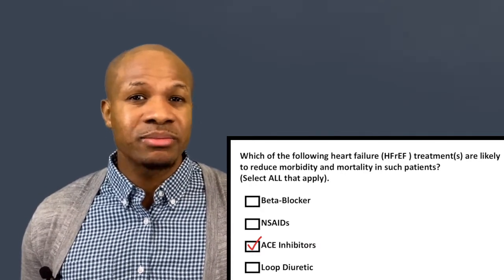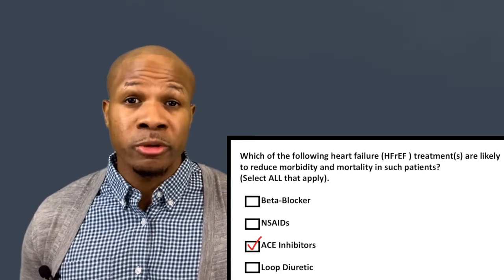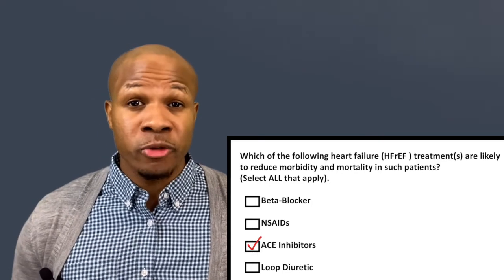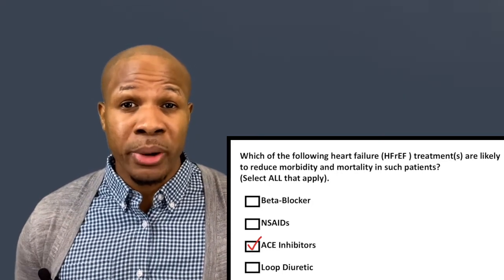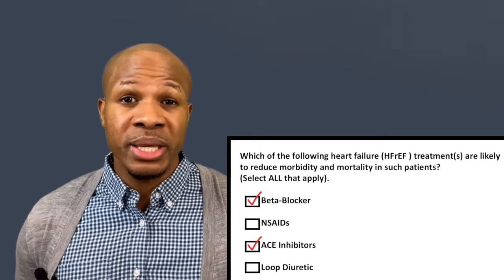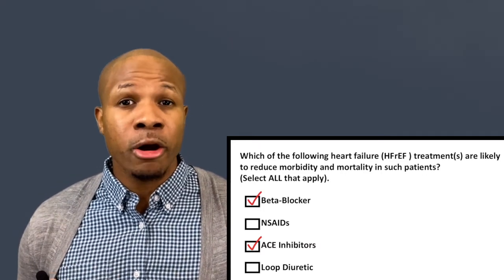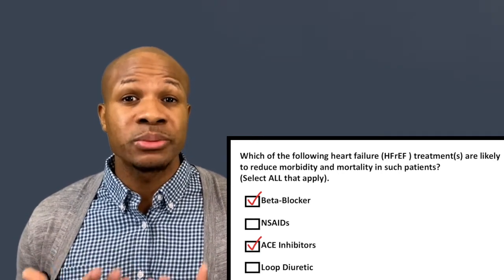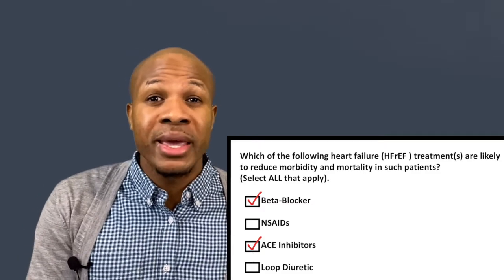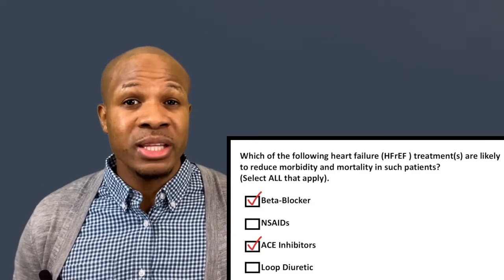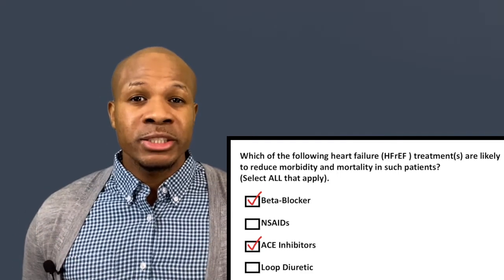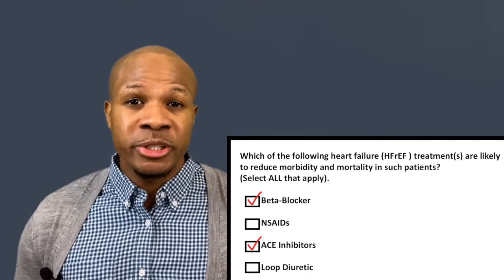NSAIDs are terrible for heart failure — these medications worsen heart failure, not improve it, so NSAIDs are incorrect. Beta blockers are a correct answer because they slow the heart rate, allowing the heart to beat with a smoother rhythm, which lets the heart function over a longer period of time. The correct answers are beta blockers and ACE inhibitors.